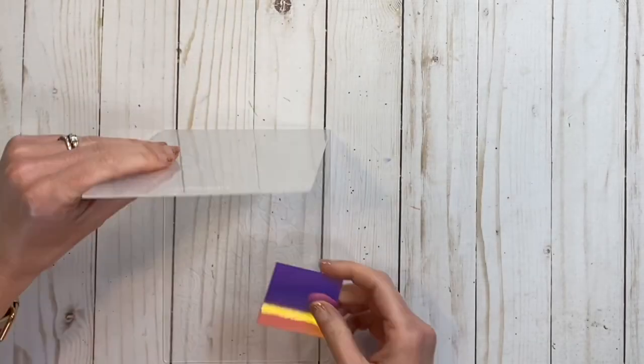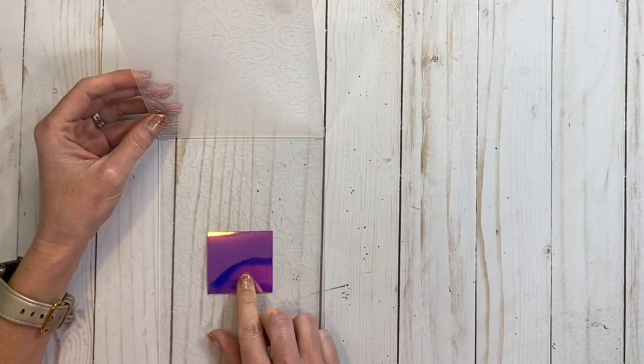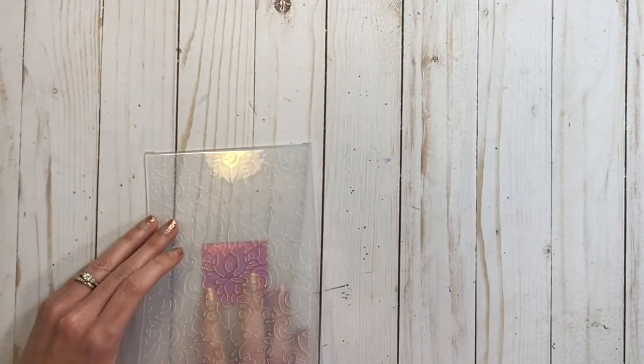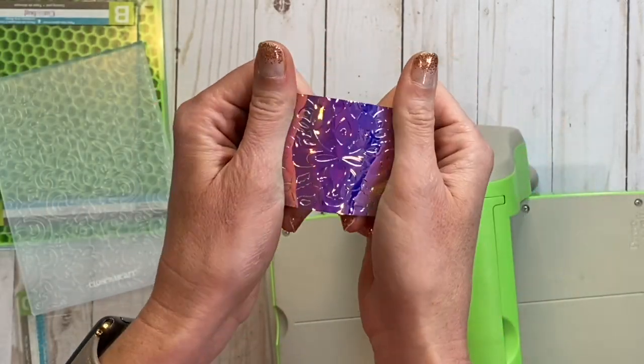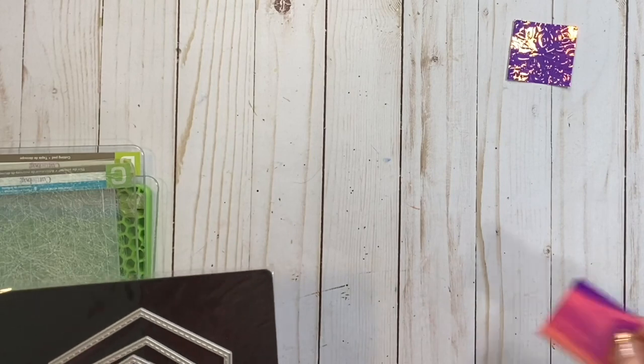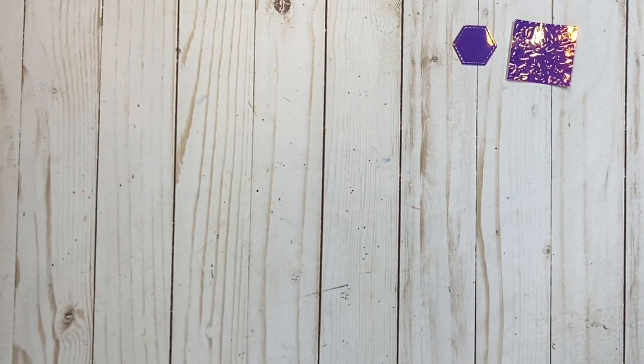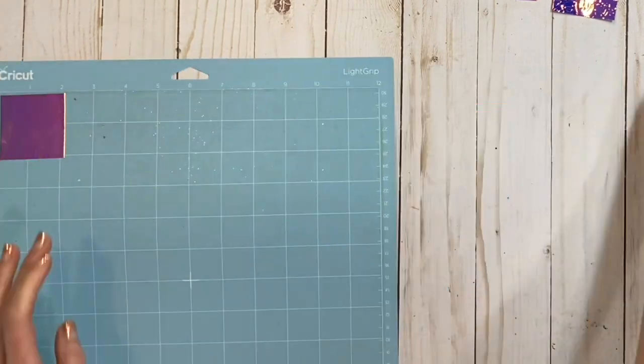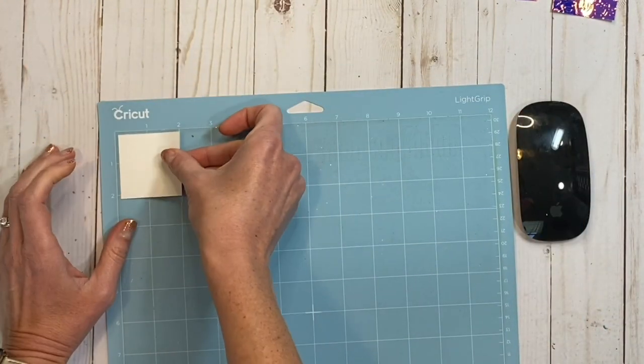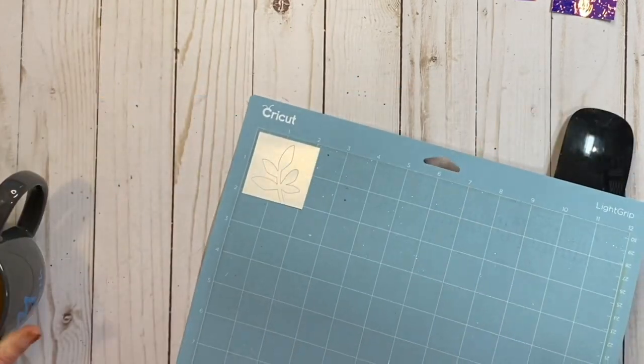Next, I decided to play around with various tools and inks on the holographic paper. So first, I used it in the embossing folder because I had a feeling that would look awesome, and it does. And then I went on to Thin Cuts, and it cut beautifully. And by the way, I will be showing you close-ups of all of these after I go through this sped-up version of the process.